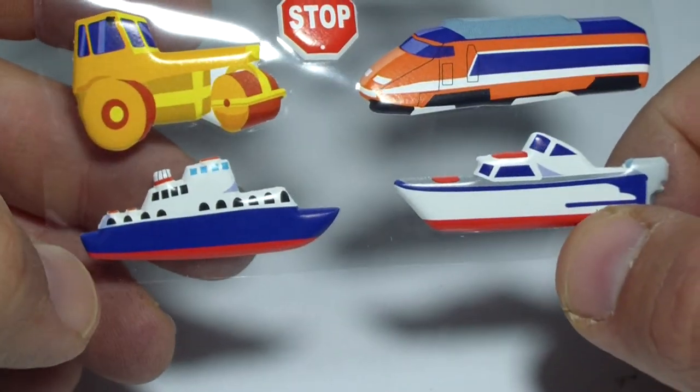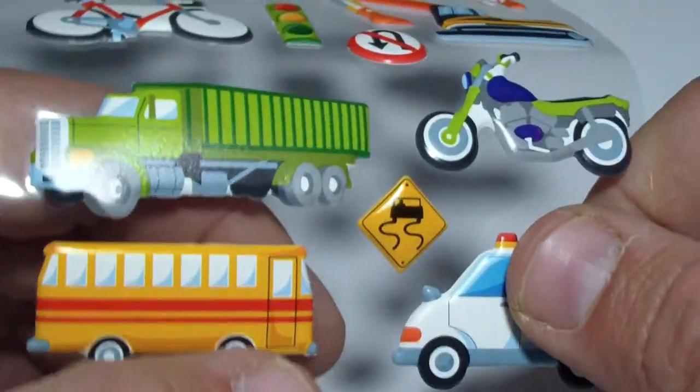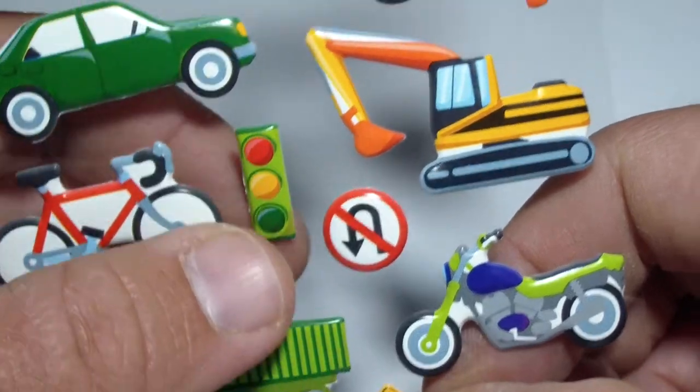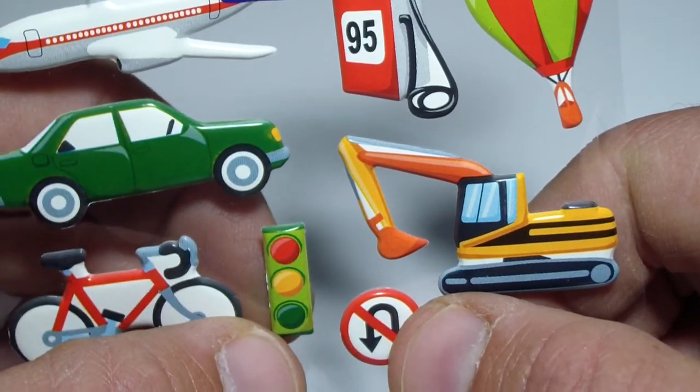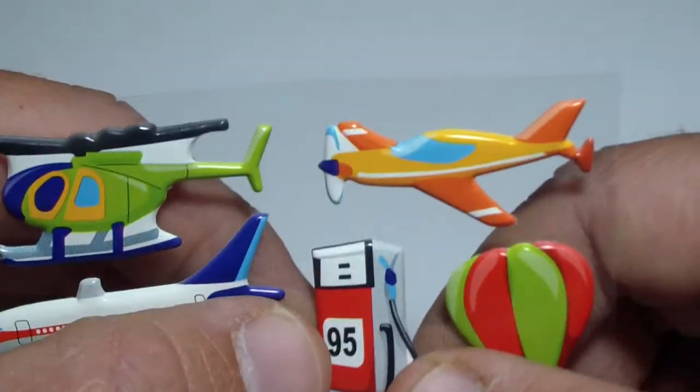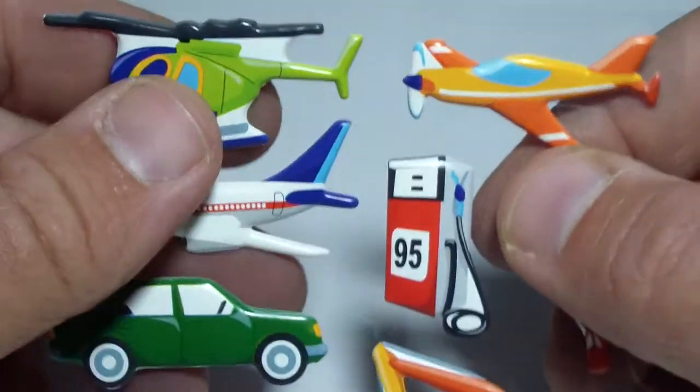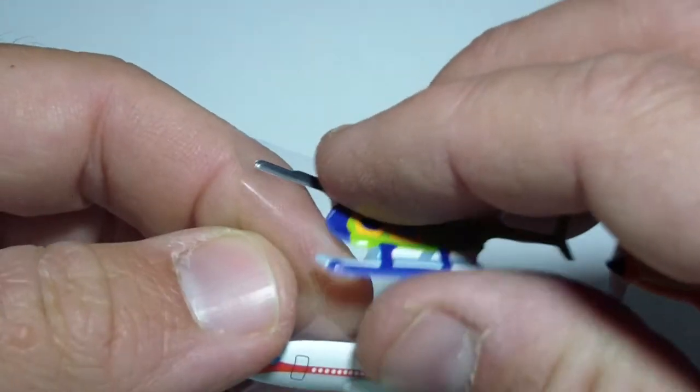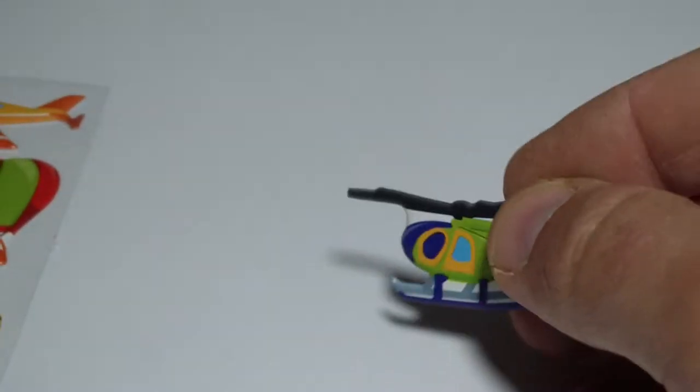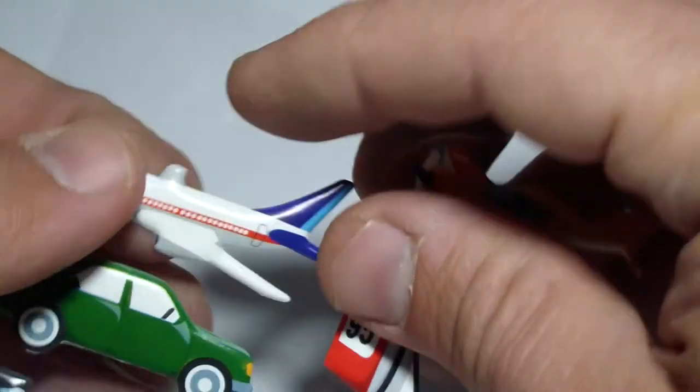We have a stop sign, a no u-turn sign, a traffic light, and a gas station. So let's stick them on this beautiful paper. If you like my channel, please subscribe and get lots of other stickers and toys.